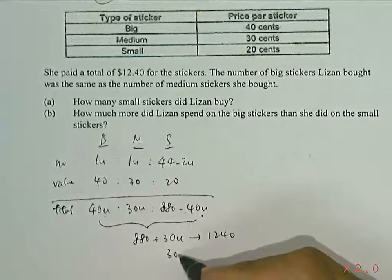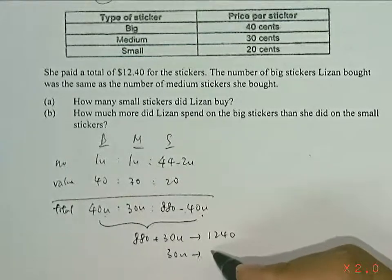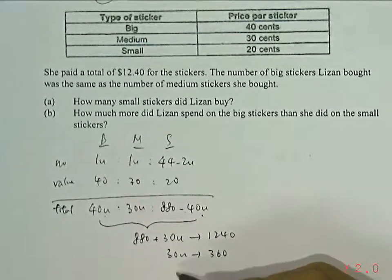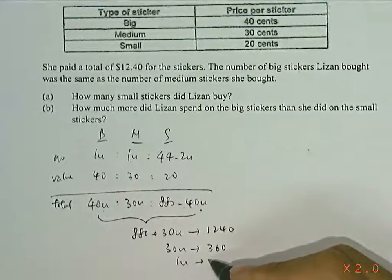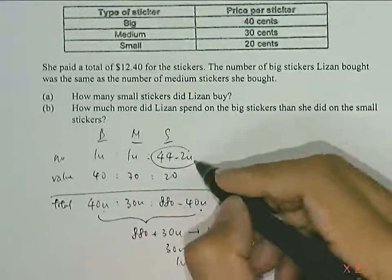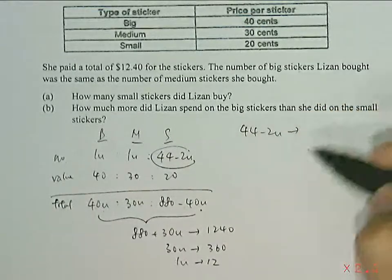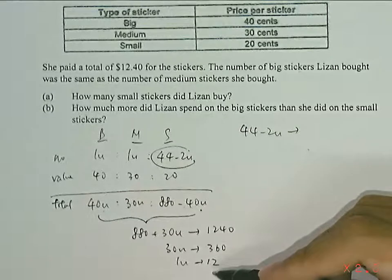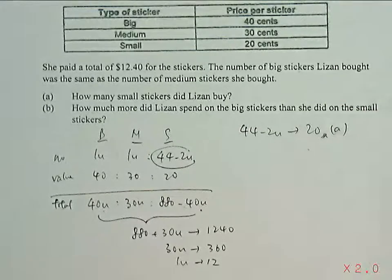So then we can have 30 units subtracting off 880, which will give us 360 for 30 units. So 1 unit will then be dividing by 30, which will give us 12 for 1 unit. So the question is asking, how many small stickers did Lizan buy? The number of small stickers would be 44 minus 2 units. So that's 44 minus 2 times 12, which gives our answer of 20 for part A.